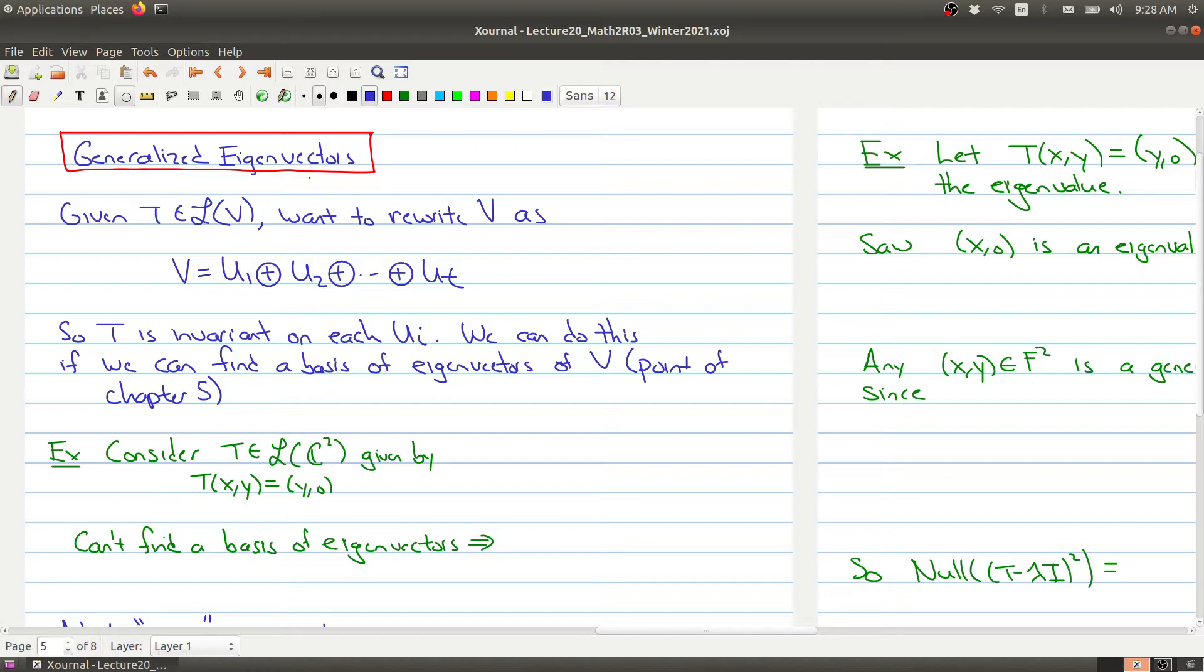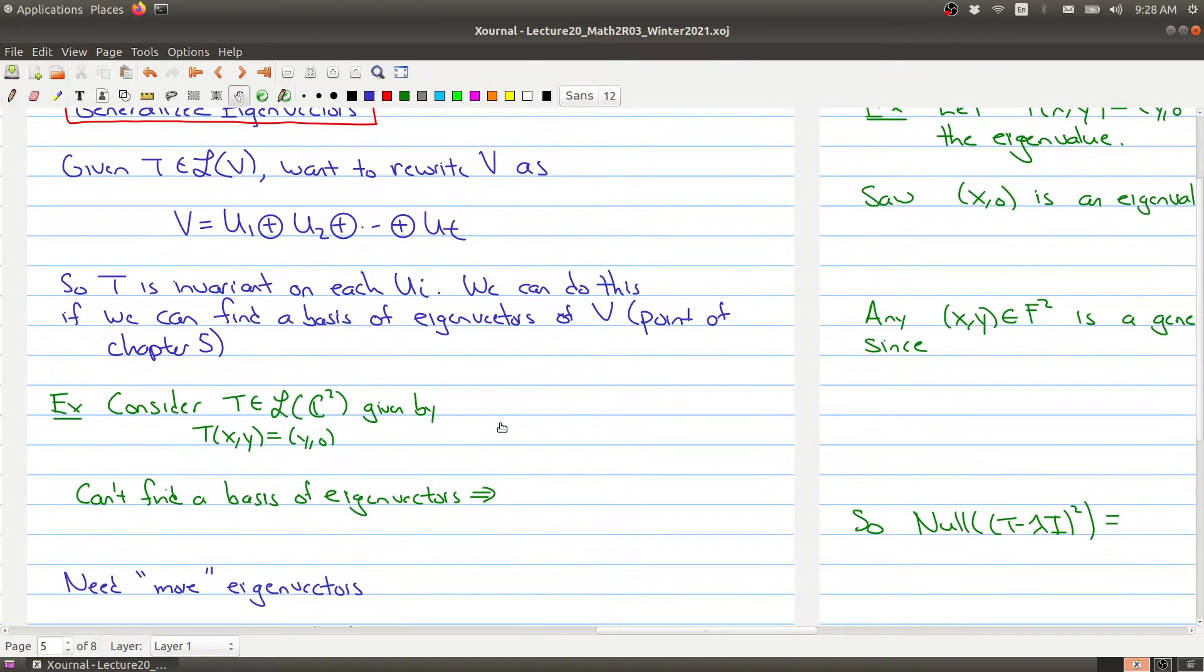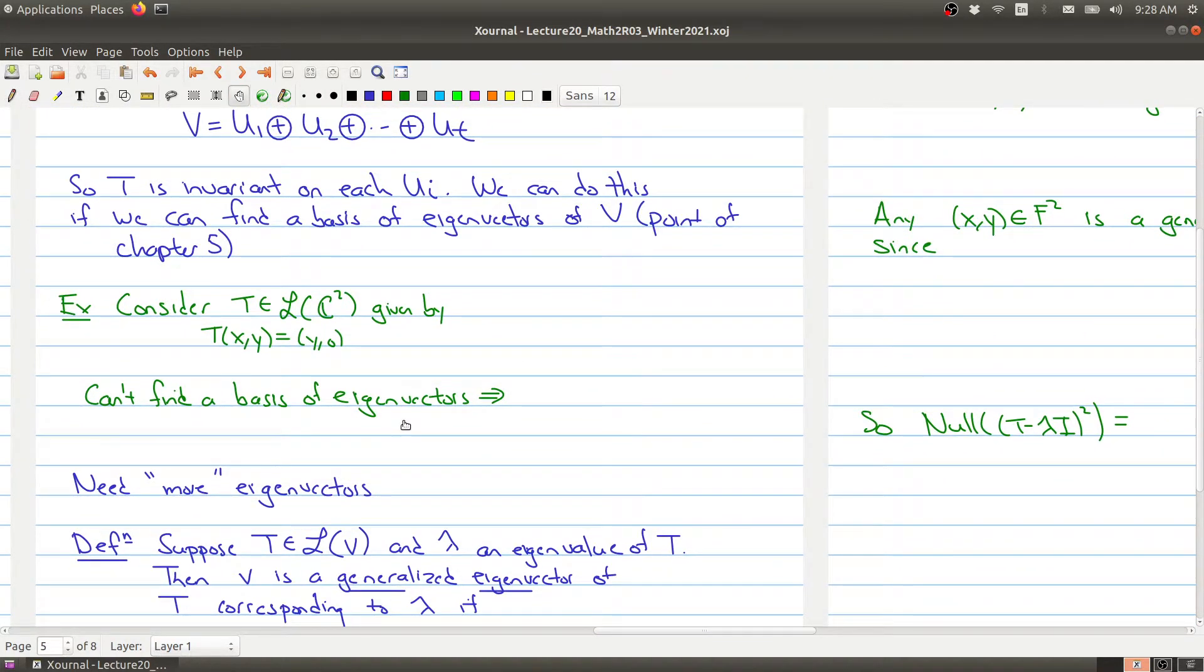Going back to the example that I started with in today's lecture, if we consider the linear map given by taking the pair (x,y), so that the second coordinate becomes the first coordinate and the second coordinate becomes zero, you can't find a basis of eigenvectors. That's the problem - there's just not enough eigenvectors.